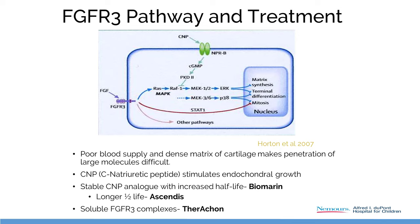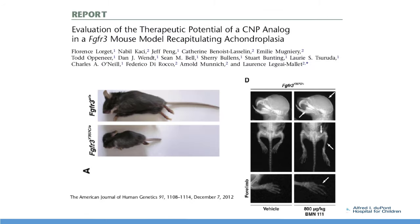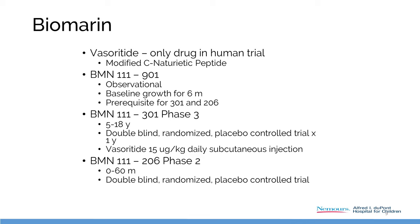Theracon is working on soluble complexes that mop up these molecules and prevent the downstream effect. Here are two achon mice — this one was treated with CNP or had its CNP turned on, and here the CNP was knocked out. You can see the effect of CNP. This is the basis of Biomarin's current trials.